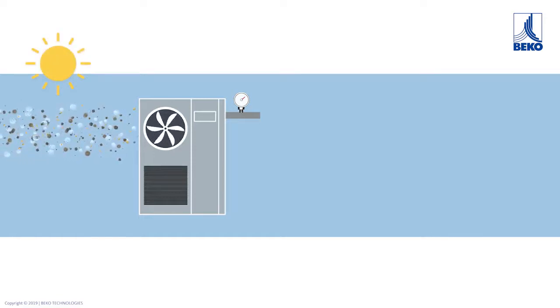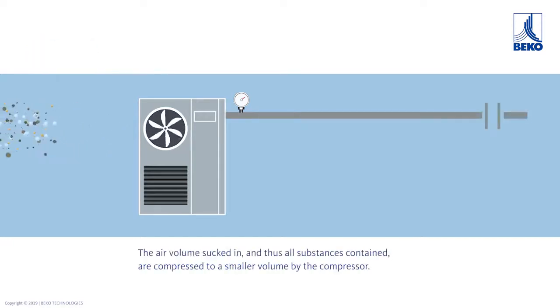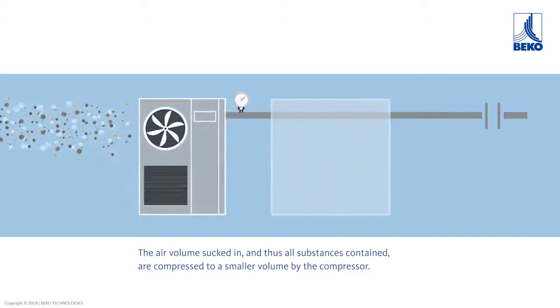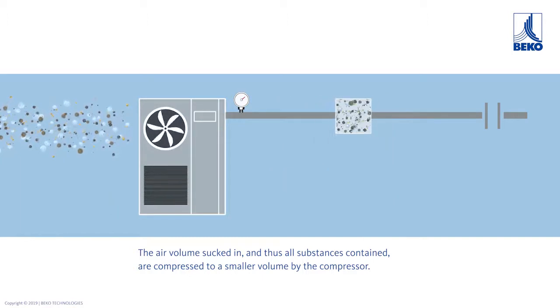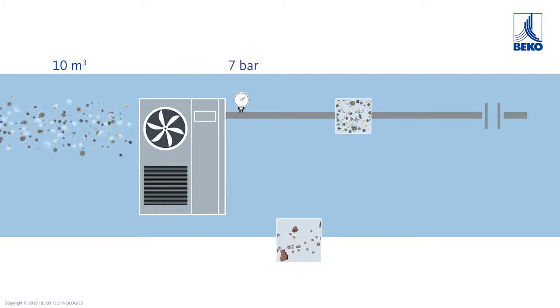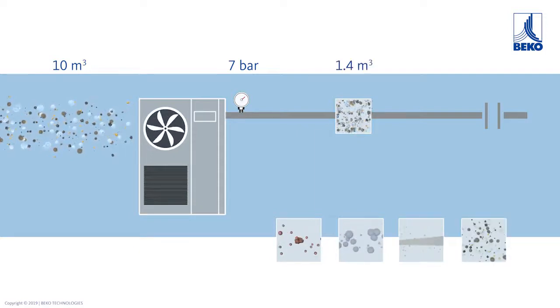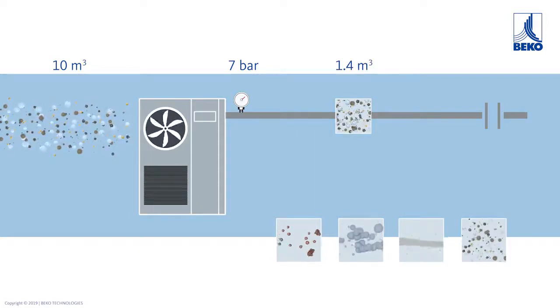The air volume sucked in, and thus all substances contained, are compressed to a smaller volume by the compressor. For example, with a compression of 10 cubic meters of ambient air with the system pressure of 7 bar, after compression all components of the sucked in air are contained in approximately 1.4 cubic meters of compressed air.